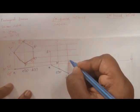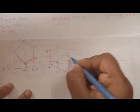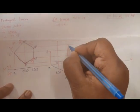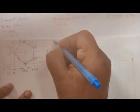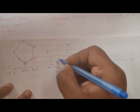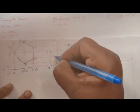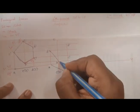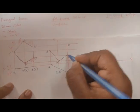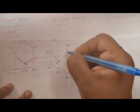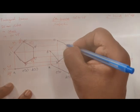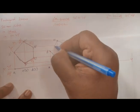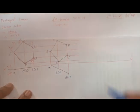Now let's write the annotation: A dash, B dash, C dash, D dash, E dash. Let's join A dash to B dash, to C dash, to D dash, to E dash, and back to A dash.